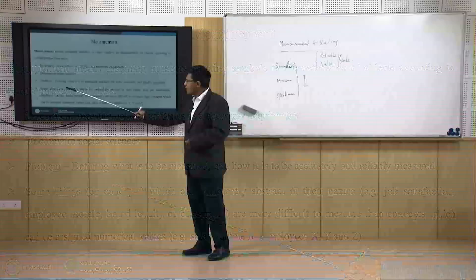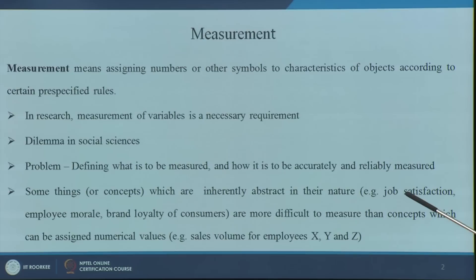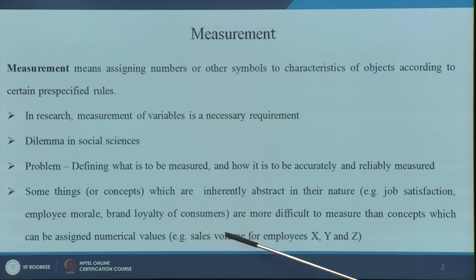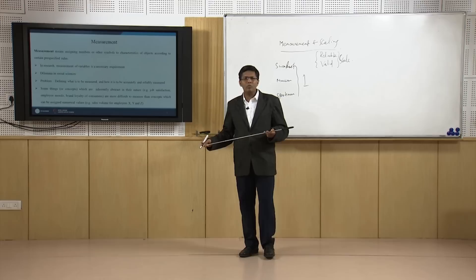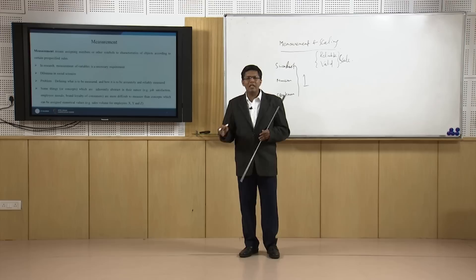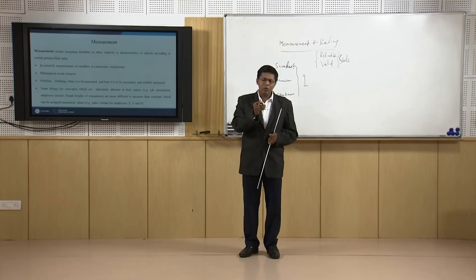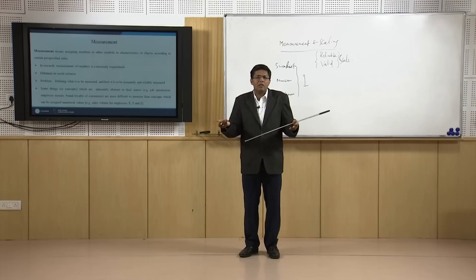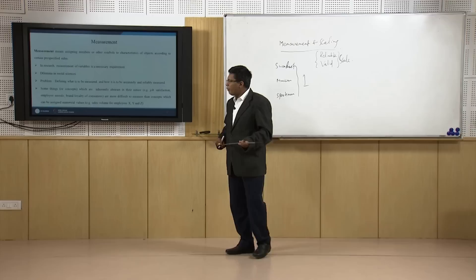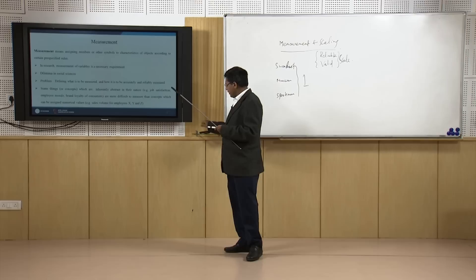Some concepts which are inherently abstract in nature — job satisfaction, morale of the employee, brand loyalty — are more difficult to measure than concepts which can be assigned a specific numerical value, for example sales volume. In engineering or pure science you have something to measure from an experiment, a value between 1 to 6. But how do you associate 2.5 with a human mind? You have to have a way of measuring, even so.